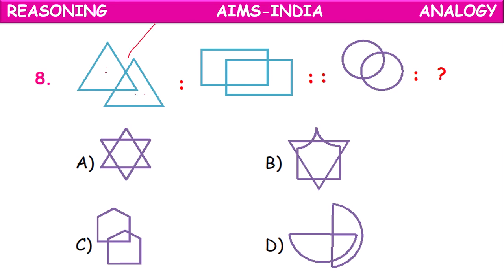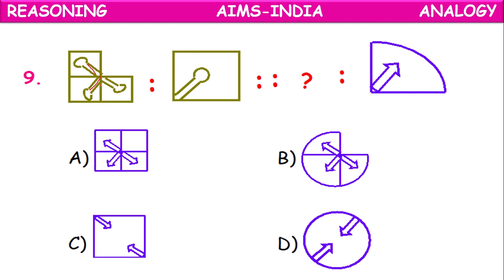Next: Two triangles overlapped, two rectangles overlapped, two circles overlapped — same kind of overlapping. For the missing fourth object, we need two pentagons overlapping in the same way. Looking at the overlap: one part is three-fourths and the missing part is one-fourth. Since the shape is curved (part of a circle), the missing part should be three-fourths of a circle. Option B is the correct answer.